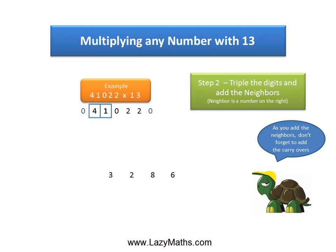And then, 4 and 1. Triple of 4 is 12, plus the neighbor 1 gives us 13. Notice how 13 is written with 1 in the carry over position.